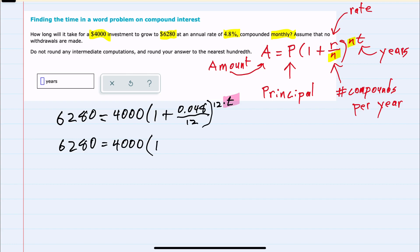which simplifies to 1.004 raised to the power of 12T. We'll continue to try to isolate T by dividing both sides by 4,000. This gives us 6280 over 4,000 equals 1.004 raised to the 12T.